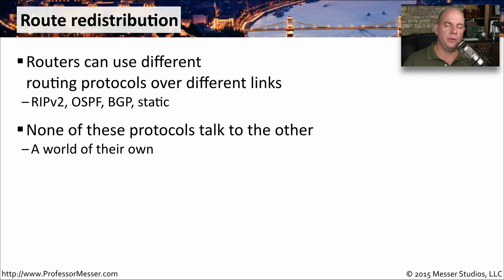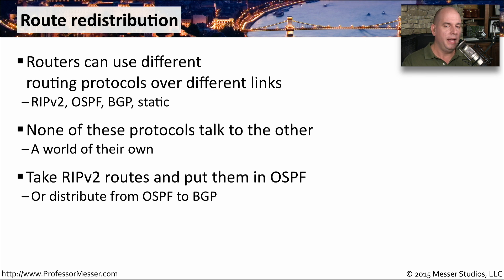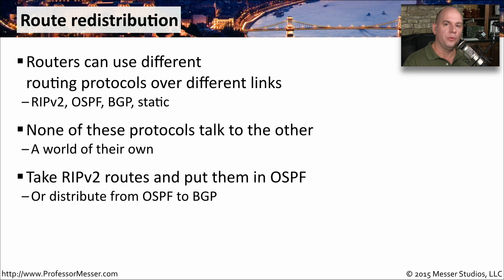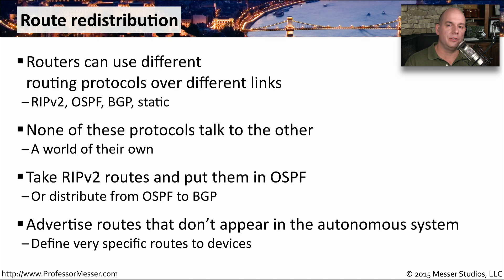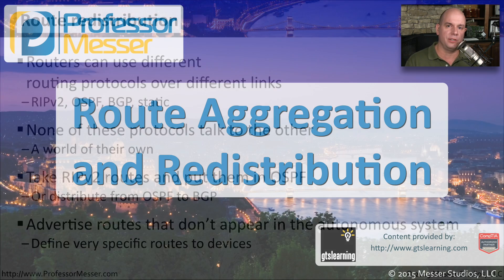None of these routing protocols can communicate with each other — you might have RIP version 2 on one side and OSPF on the other. One way to take routes from one system and convert them so they can be used in a different system is to use route redistribution. This can redistribute routes learned via one method and redistribute them through another entirely — for example, taking routes determined through RIP version 2 and changing them so they can be advertised through OSPF, or taking OSPF routes and redistributing them so they can be seen on a BGP network. Route redistribution also allows us to take routes that aren't normally advertised on our internal network and advertise them to the outside, which may be useful if we need to advertise a service so that people can access a web server or file server inside our organization.